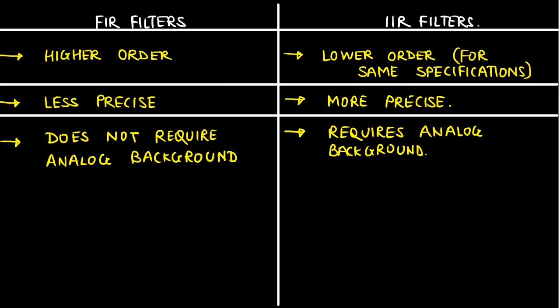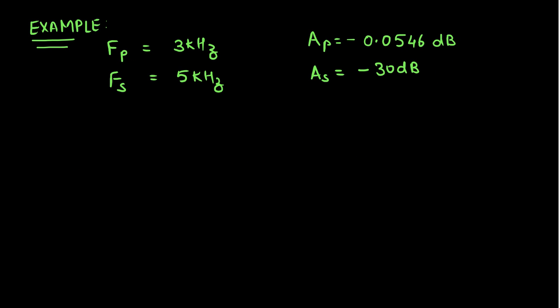Let us consider the same set of specifications for the design of FIR and IIR filters. The passband edge Fp is 3 kHz, the stopband edge is 5 kHz, the passband attenuation is minus 0.0546 dB, and the stopband attenuation AS is minus 30 dB. These specifications are in the analog domain. To convert to the digital domain, we consider a sampling frequency Fsample of 20 kHz.